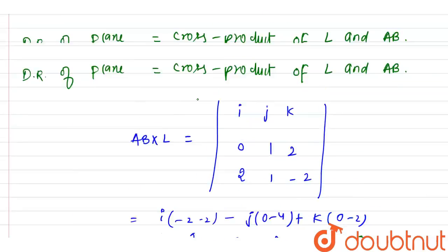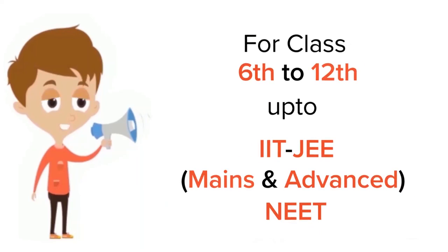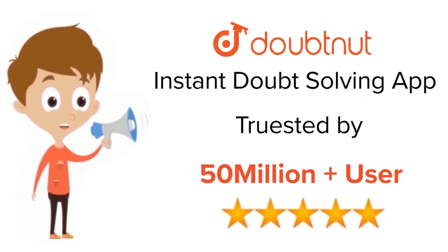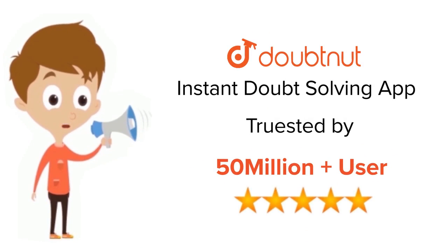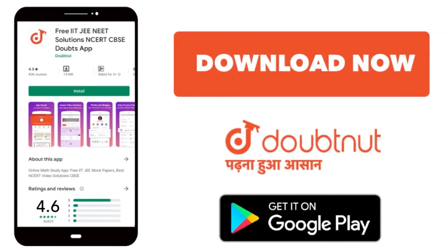Checking the options: option 1, which is 1/3, is correct. Thank you. For class 6 to 12, IIT JEE and NEET level — trusted by more than 5 crore students. Download the Doubtnut app today.